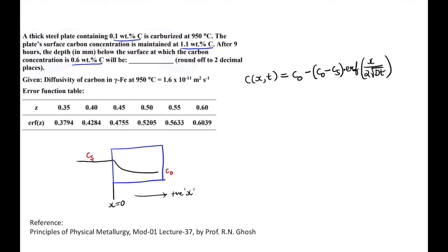So now what they are asking is at what point of depth, which is x, after a certain time period which is 9 hours, how much will be my C(x,t)? It has to be 0.6. So they are telling that C(x,t) = 0.6 equal to what is C₀?